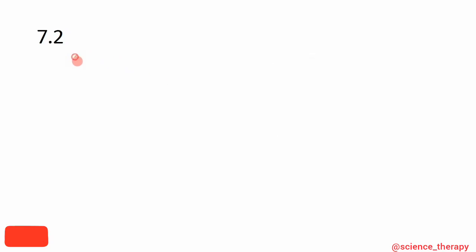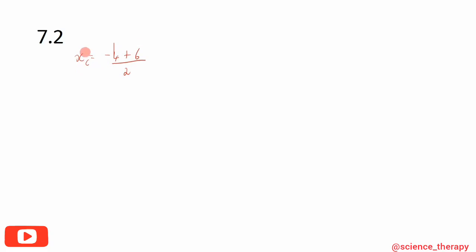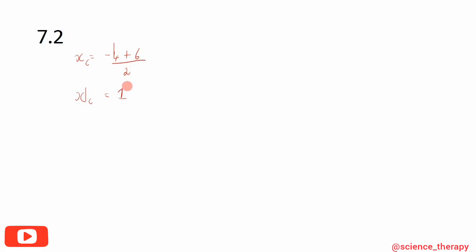For the x-coordinate of C, we calculate the midpoint of the x-intercepts: x_C = (-4 + 6) / 2. Negative 4 plus 6 is 2, divided by 2 gives 1. So x_C = 1.